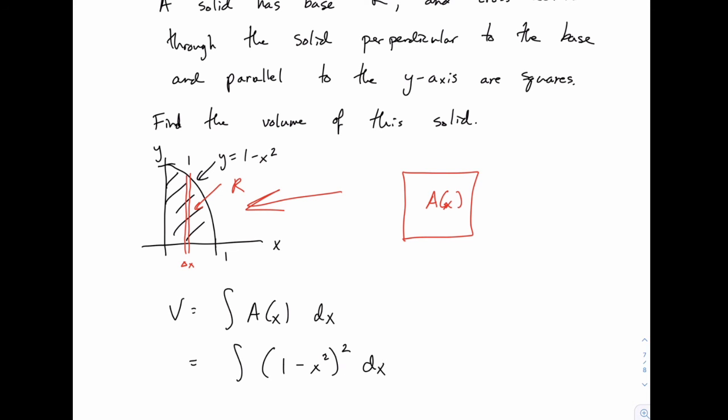The limits of integration—the x values at the extreme edges are x = 0 on this edge and x = 1 on this edge. That's as far as x goes on either side.